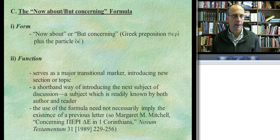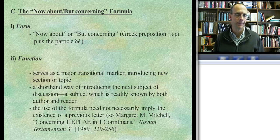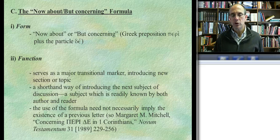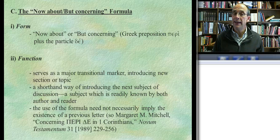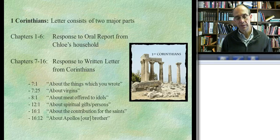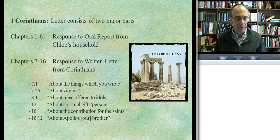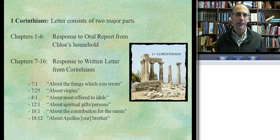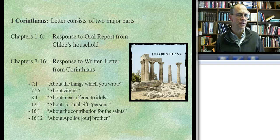The takeaway is knowing not just the form of the disclosure formula but its function: first, as a marker of transition; second, indicating degrees of pleasure or displeasure. The third transitional formula is the 'now about' or 'but concerning' formula. In Greek it's a fixed expression: peri de. It's usually the very first thing in the sentence, since peri is a preposition and de is always in the post-positive position—the second element. Its primary function is to introduce a new section or a new topic.